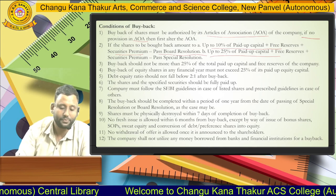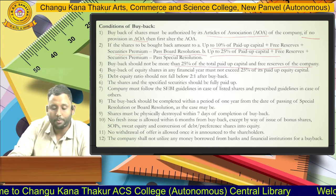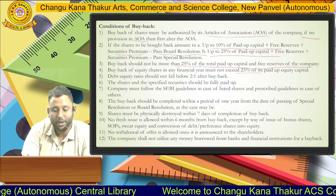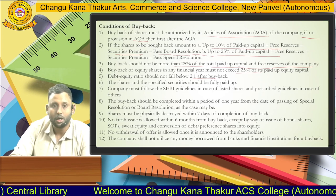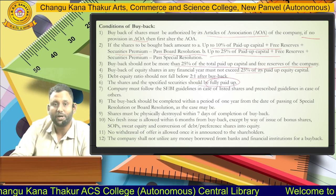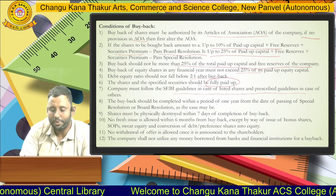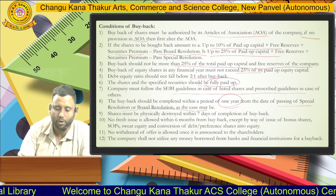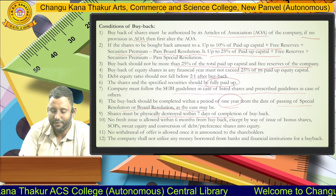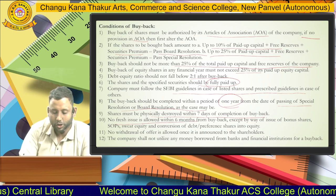Third condition: buyback should not be more than 25% of total paid-up capital and free reserves of the company in a year. Fourth, buyback of equity shares in a financial year must not exceed 25%. Fifth, the debt-equity ratio shall not fall below 2:1 after buyback. Next, shares and specified securities should be fully paid — only fully paid equity shares can be bought back. The company must follow SEBI guidelines for listed shares. The buyback should be completed within 1 year from the date of passing the special resolution or board resolution. Shares must be physically destroyed within 7 days of completion of the buyback.